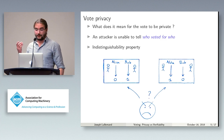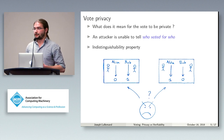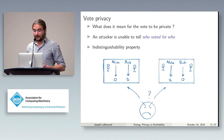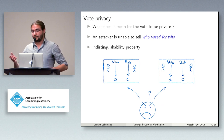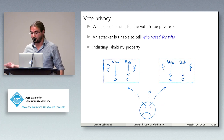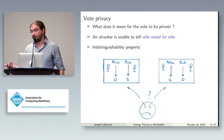More in detail: what does it mean for the vote to be private? When we say the vote is private, we mean that an attacker should not be able to know which voter voted for which candidate. Formally, this will be an indistinguishability property where the attacker sees the results — say, one vote for zero and one for one — and the attacker should not be able to know whether Alice voted for zero and Bob for one, or the other way around.